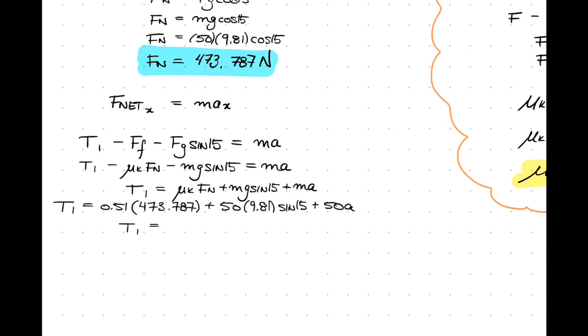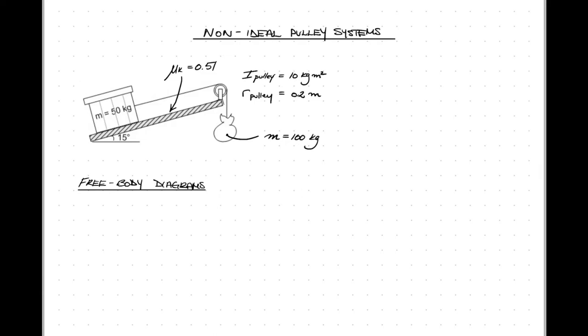Here we're going to solve for T1. T1 is an unknown, as well as a, but let's solve for T1. So T1 comes out to 368.582 plus 50a.